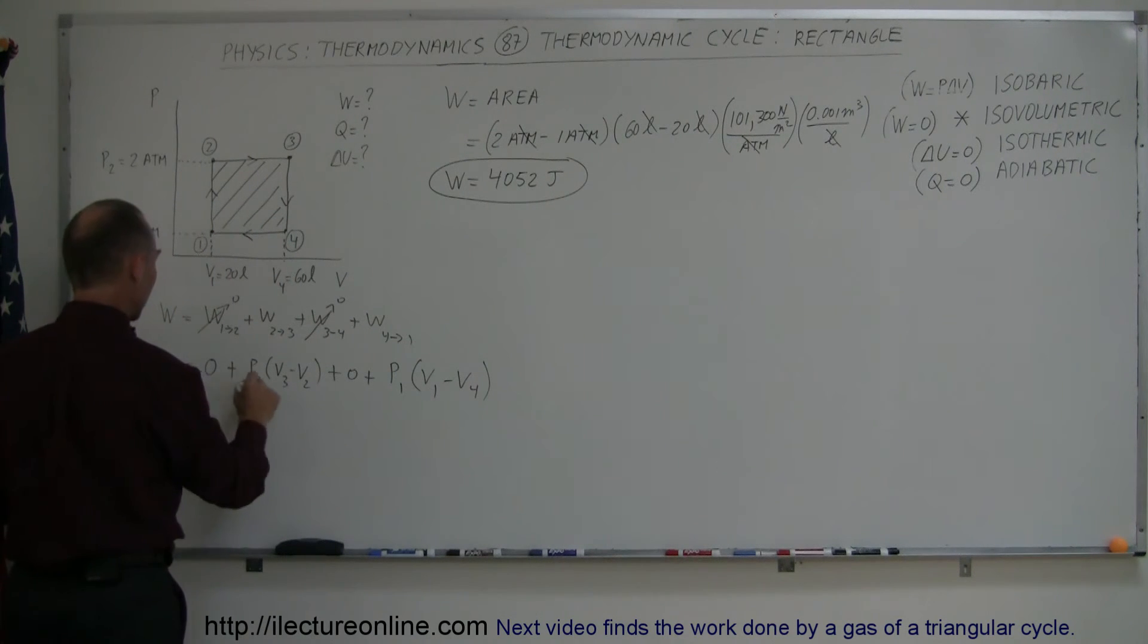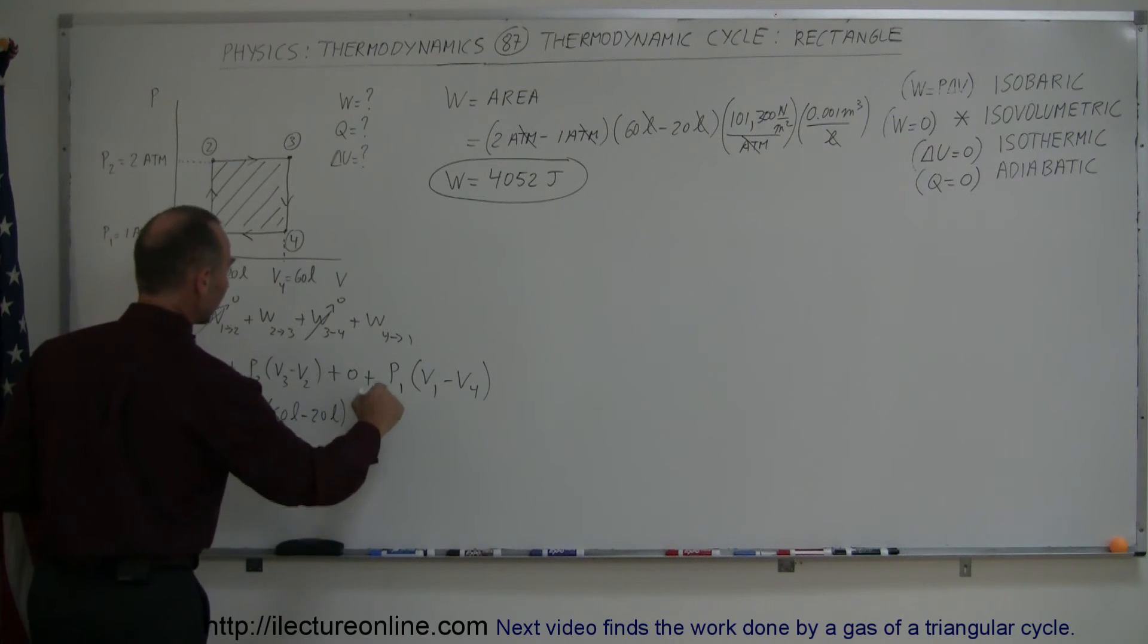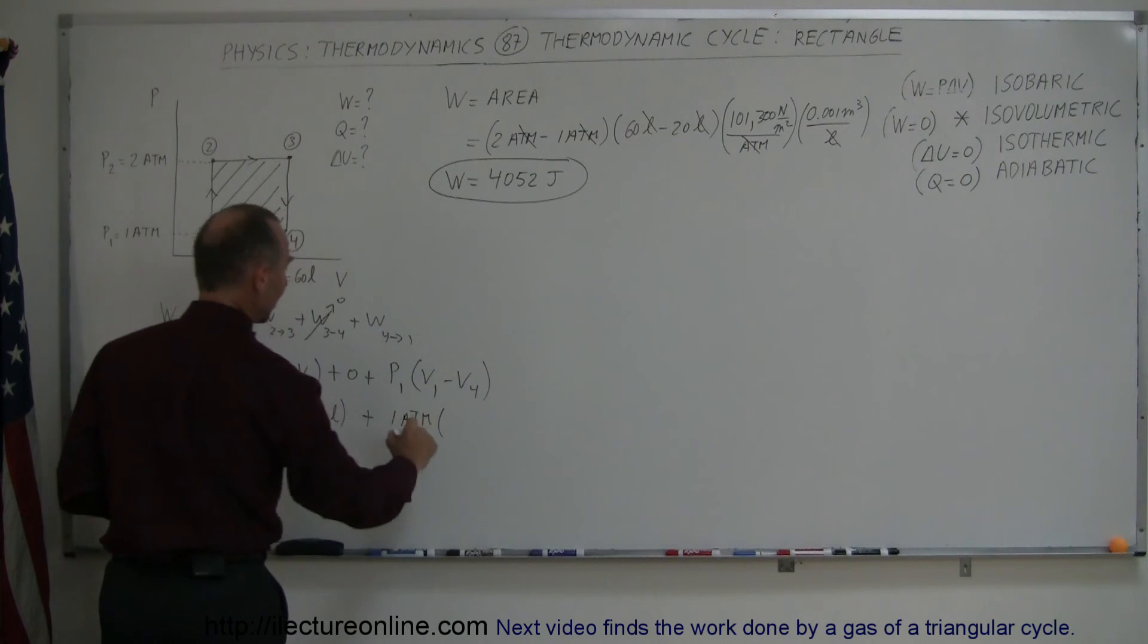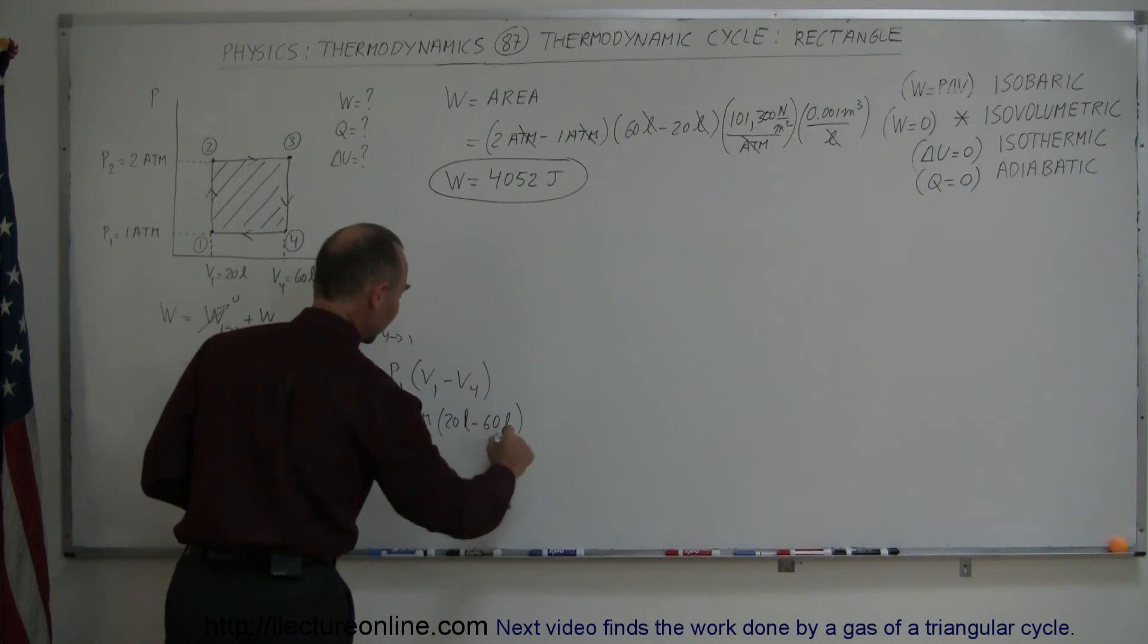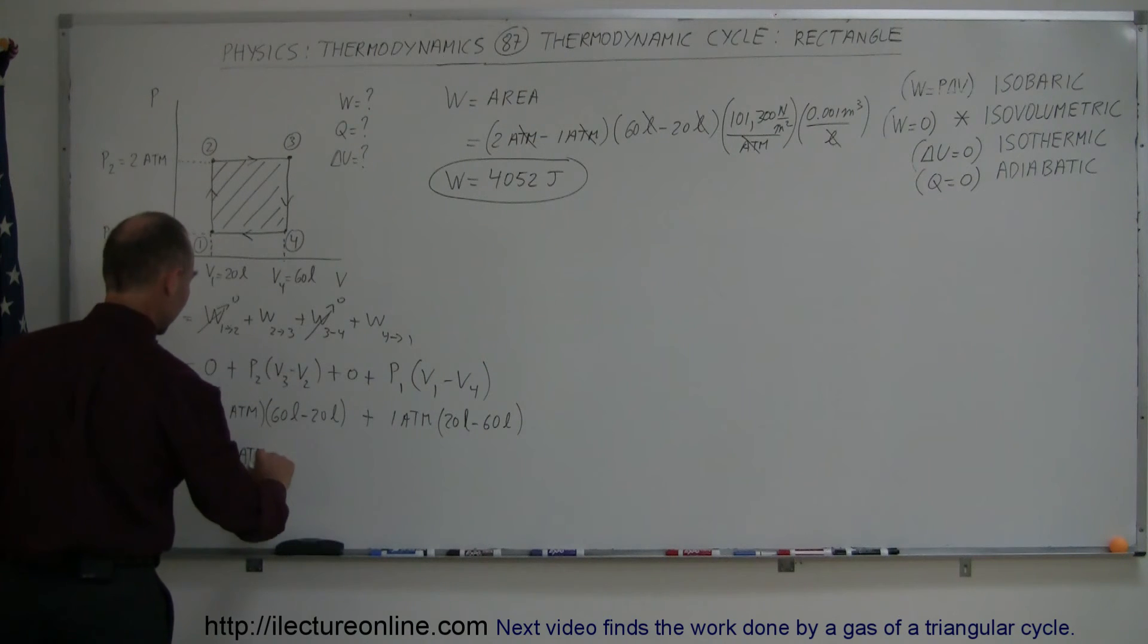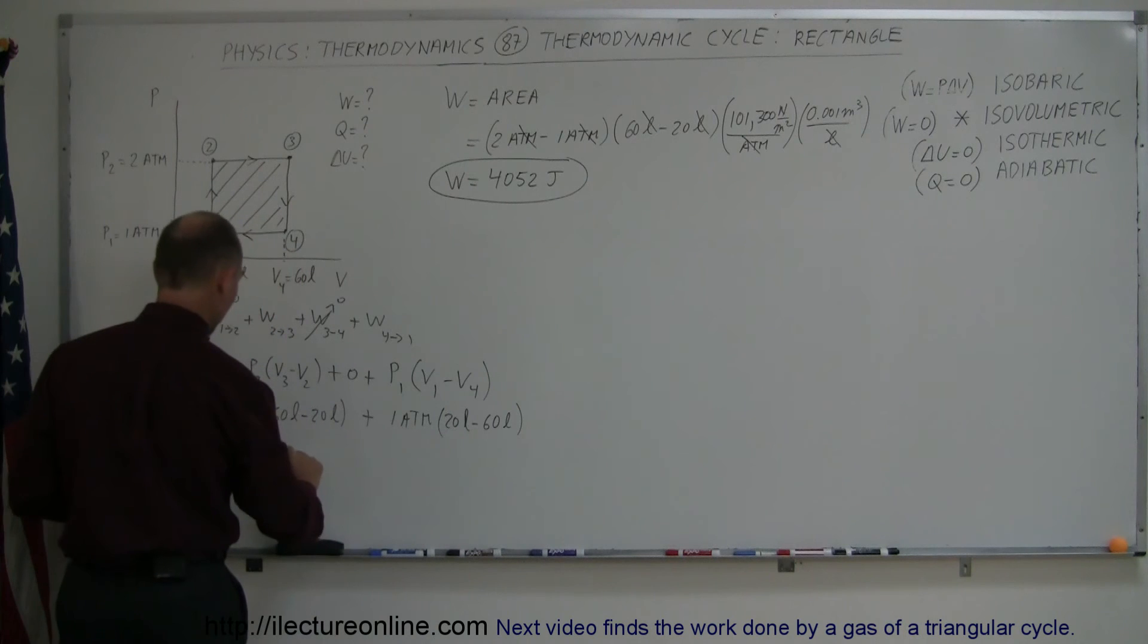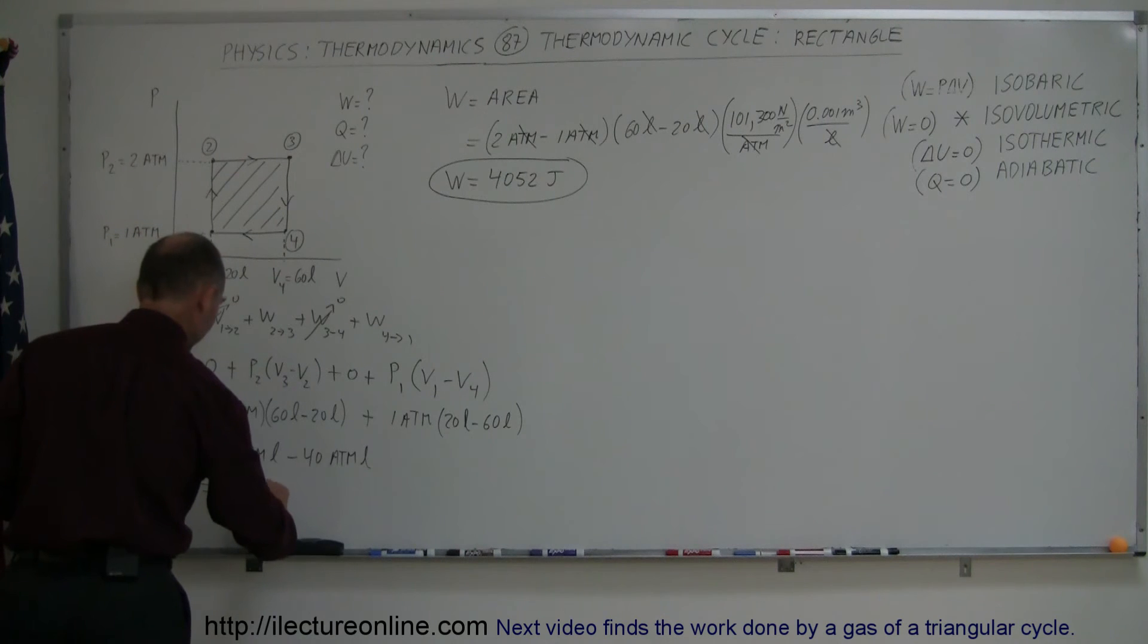Plug in the numbers. P2 is equal to 2 atmospheres. Multiply times V3, which is 60 liters, minus V2, which is 20 liters, plus the pressure at 1, which is 1 atmosphere, times V1, which is 20 liters, minus V4, which is 60 liters. So here we get 2 times 40, or this is equal to 80 atmospheres liters. And that's going to be negative quantity, minus 40 atmospheres liters, which is equal to 40 atmospheres liters.